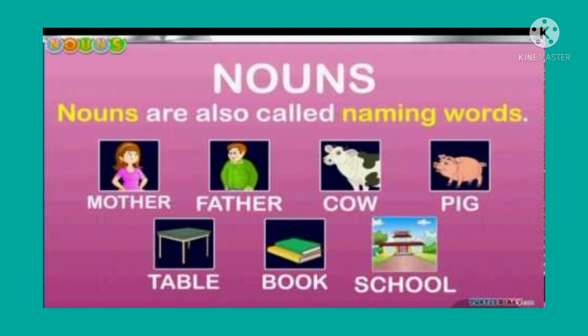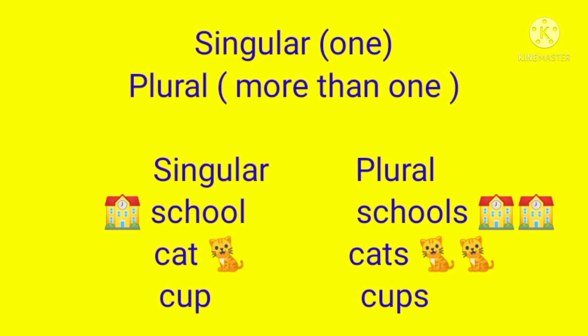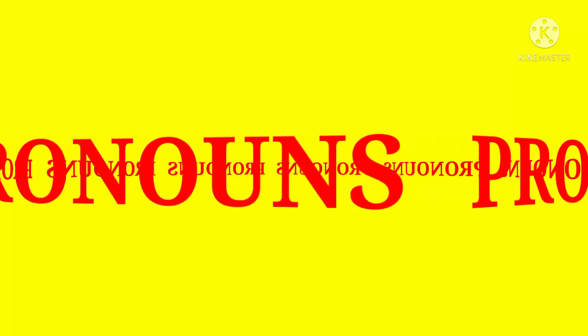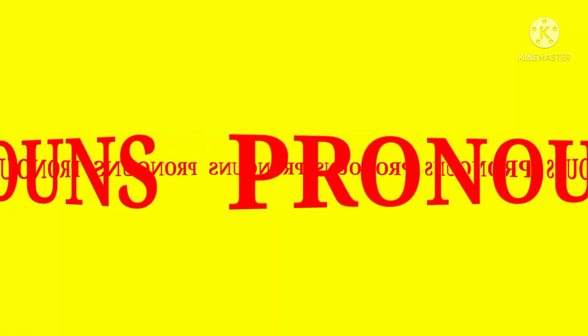Dog, cat, elephant, etc. are the examples of names of animals. Cup, book, pencil are the examples of names of things. Children, nouns can be singular or plural. For example, school — schools. Cat — cats. Cup — cups. Children, I hope you have understood about the nouns.